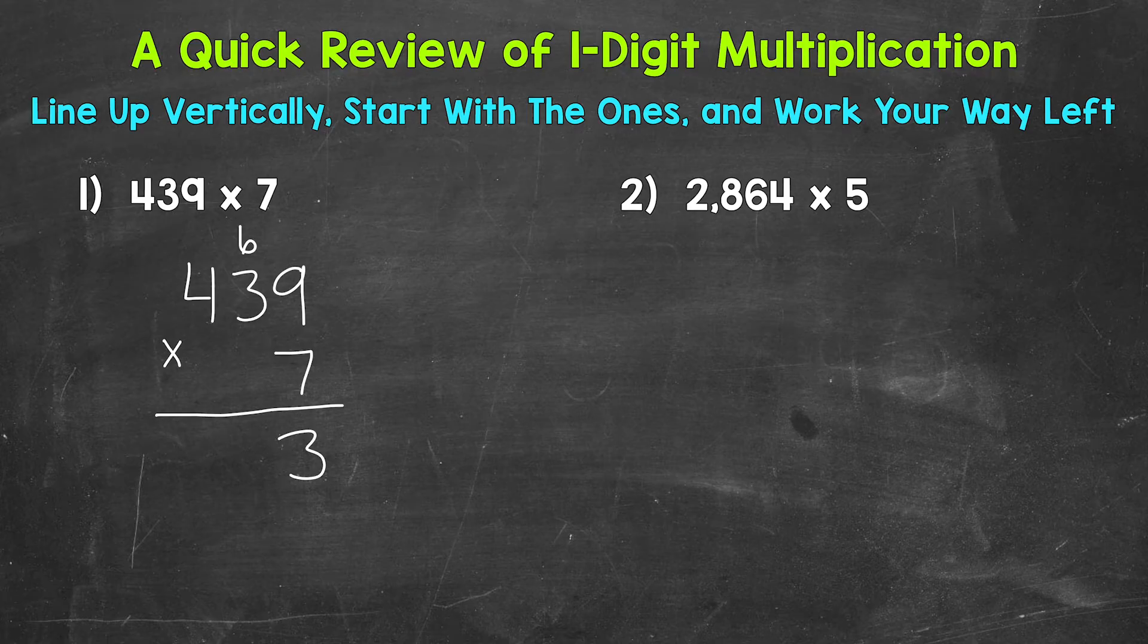So next would be the tens place. So we have a 3 in the tens place. 7 times 3 is 21, and then we add that carried 6. So 21 plus 6 is 27. Let's put our 7 and carry the 2.